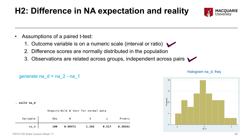Running the Shapiro-Wilk test on this new variable, we get a non-significant result with a p-value of 0.3 — much larger than 0.05. Therefore this assumption is met: our difference scores are normally distributed. All three assumptions are met and we can proceed with the paired samples t-test.